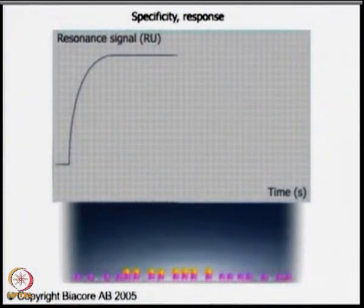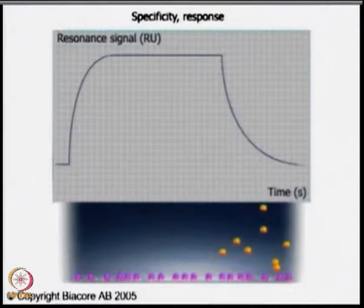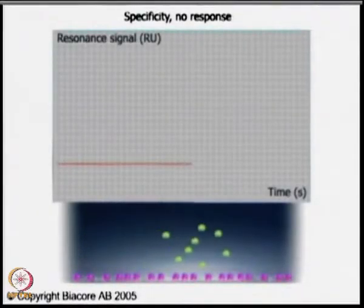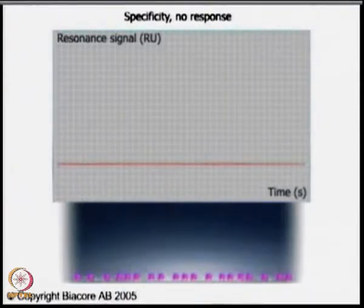Biacore stands for BIA — Biological Interaction Analysis. Here is a simple example where A plus B gives AB. If you see the curve and the curve is present, it means AB is formed. If you pass A over B and there is no response — a flat line — then AB is not formed. So it is a very simple example where you can actually decide whether the interaction is happening or not.